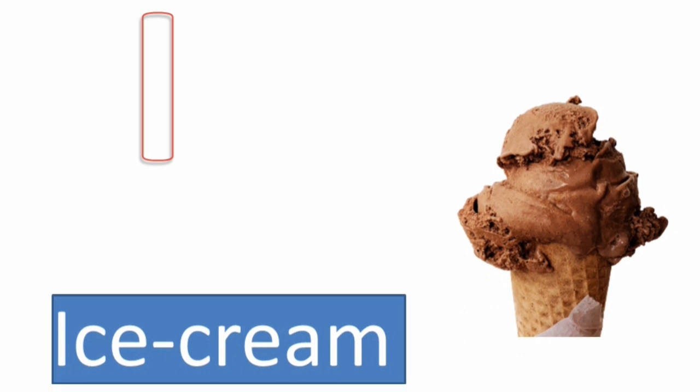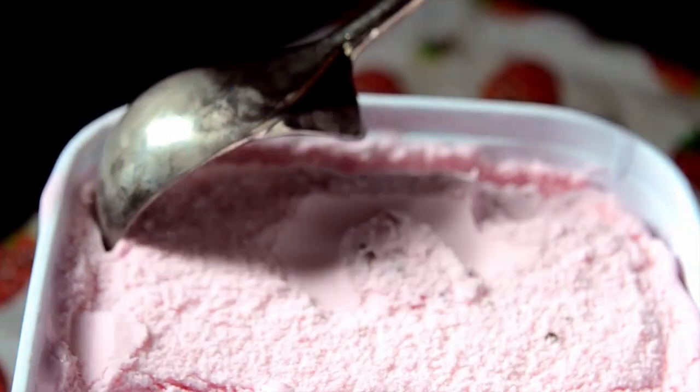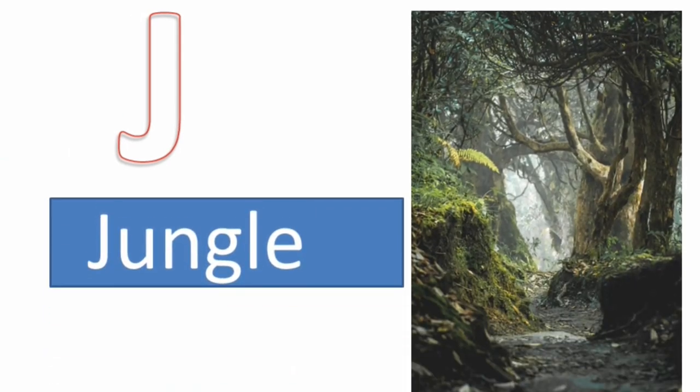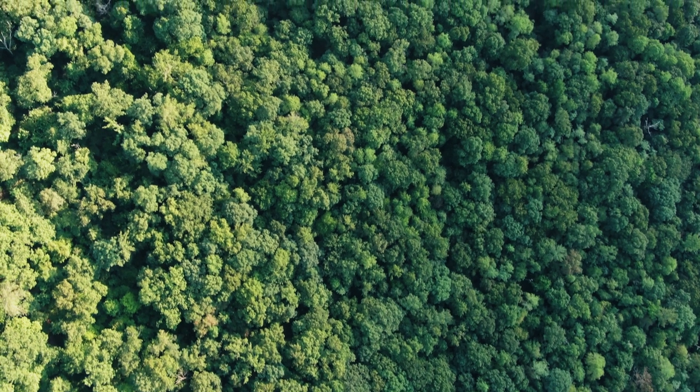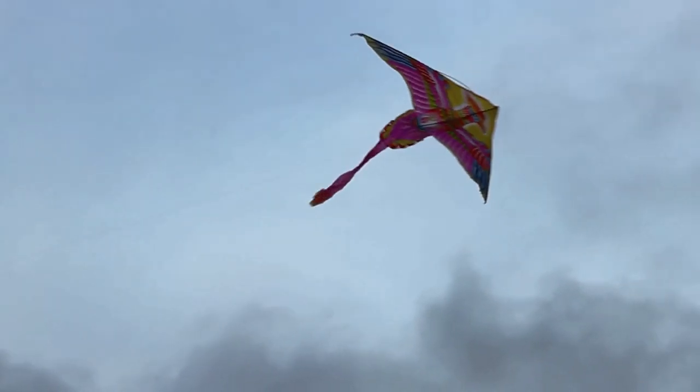I for ice cream. J for jungle. K for kite. L for lion.